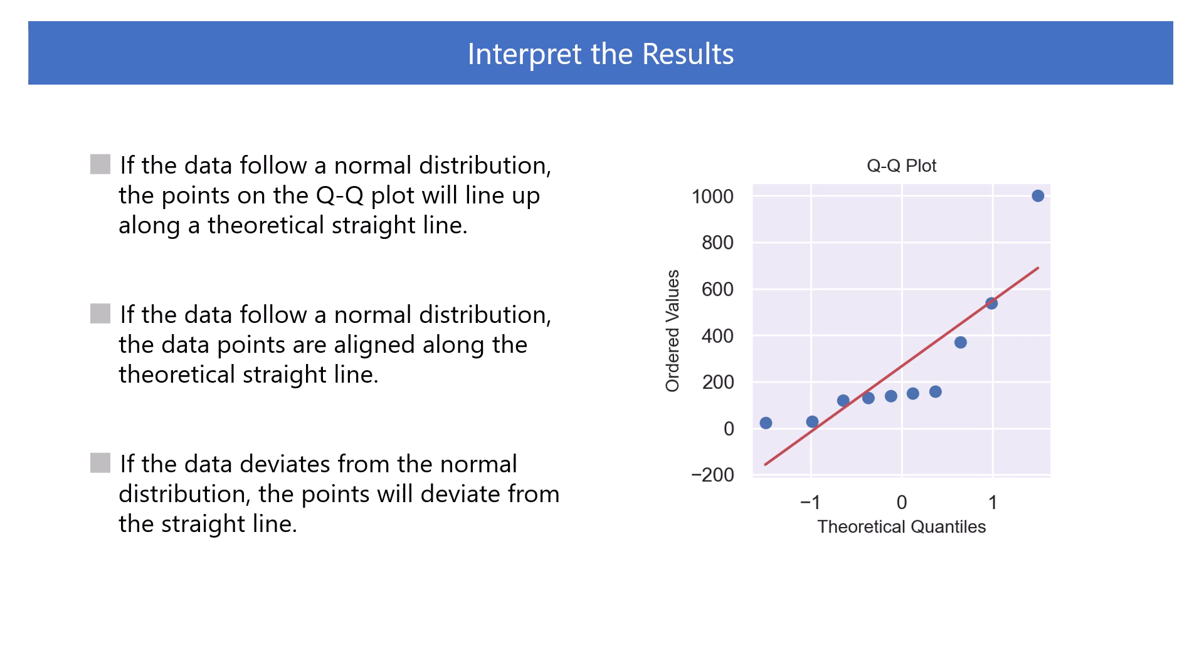If the data follows a normal distribution, the points on the Q-Q plot will line up along a theoretical straight line. This enables us to visually check how close the distribution of the data is to the normal distribution.